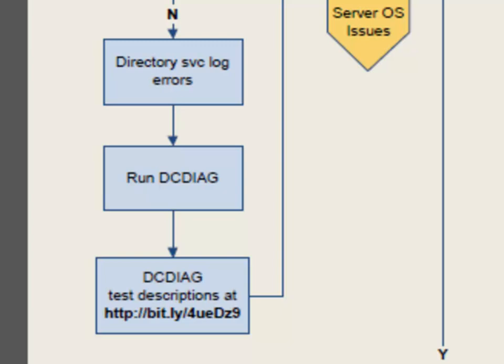Looking at the errors in general will give you a sense of what the problem might be, but the thing to really do if you're getting many errors is to open a command prompt in administrative mode and run dcdiag — all by itself, no operands, just dcdiag. You can get a pretty thorough description of all the different tests that dcdiag runs at the URL bit.ly/4uedz9 — a good reference point if you want to learn more about what dcdiag is doing.